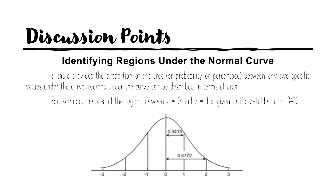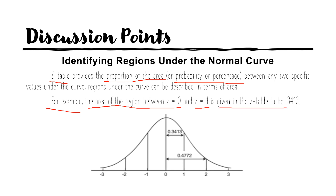For our discussion points on identifying regions under the normal curve: your Z-table provides the proportion of the area, probability, or percentage between any two specific values under the curve. Regions under the curve can be described in terms of area. For example, the area of the region between Z equal to 0 and Z equal to 1 is given in the table to be equal to 0.3413.